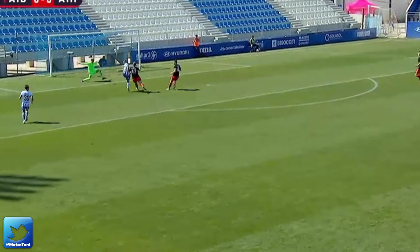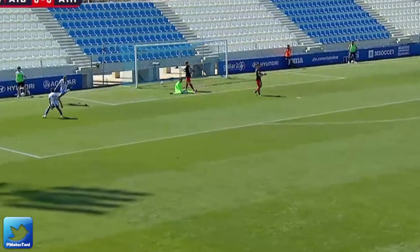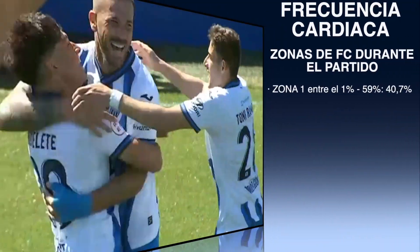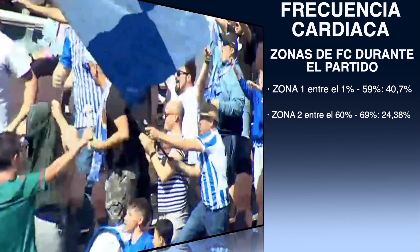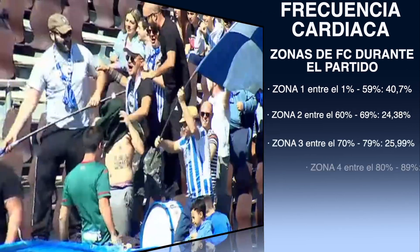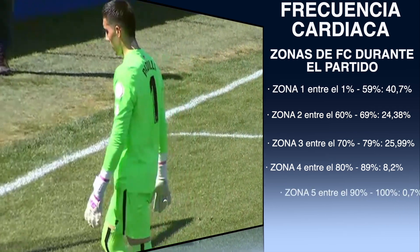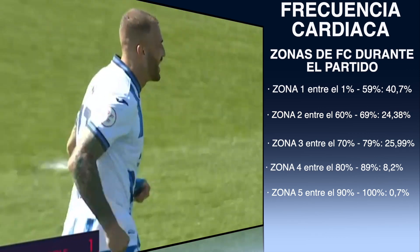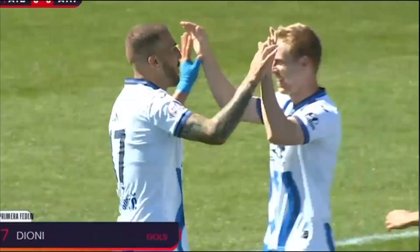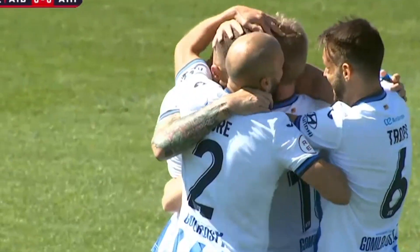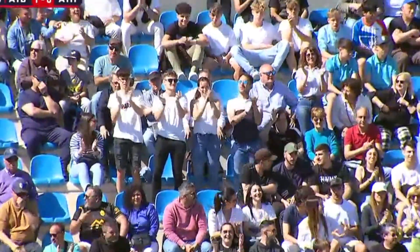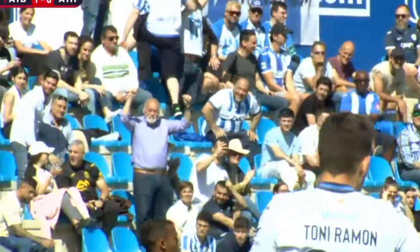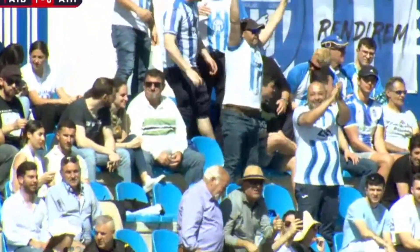A pesar de que el 40% del tiempo de un partido el futbolista se mueve en valores inferiores al 60% de su frecuencia cardíaca máxima, hay que destacar que aproximadamente el 35% de un partido el futbolista lo pasa en las zonas 3, 4 y 5, por encima del 70% de su frecuencia cardíaca máxima. Precisamente, las acciones que suceden durante este periodo de tiempo y a esta intensidad son las más relevantes en el rendimiento del futbolista durante el partido.